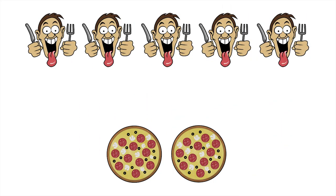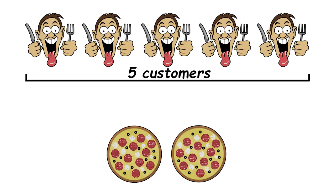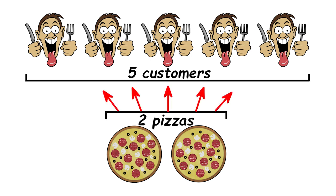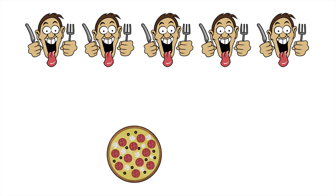Let's see if we can help Peppy. There are five customers and two pizzas. We want to divide the pizzas up into equal-sized slices and share them out so each customer gets the same amount. Let's deal with one pizza at a time. There are five customers, so let's divide the first pizza up into five equal-sized slices so it gets shared out equally.